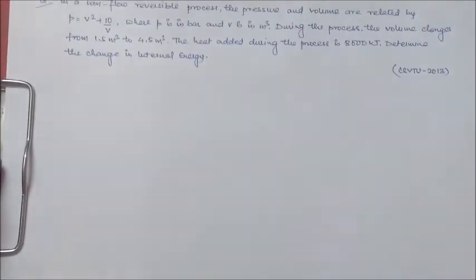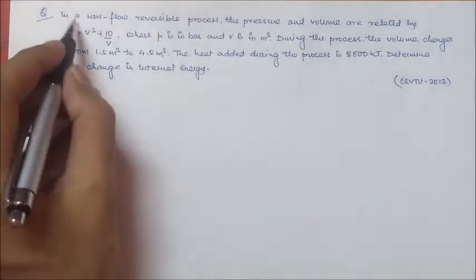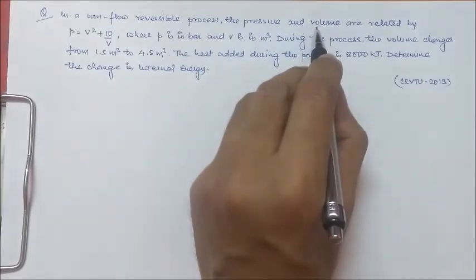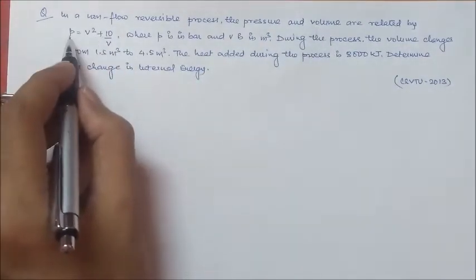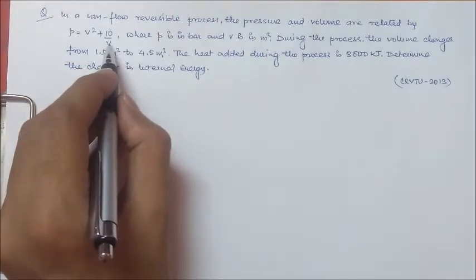In this video, we will discuss a question from the CSVTU University exam in 2013. The question is: in a non-flow reversible process, the pressure and volume are related by P equals V squared plus 10 by V.